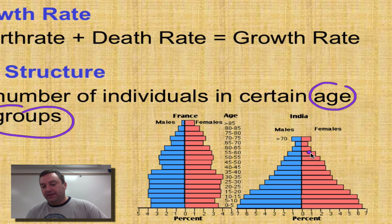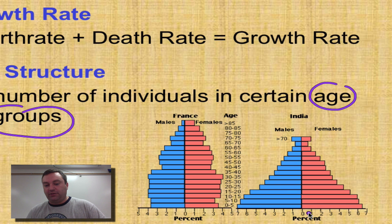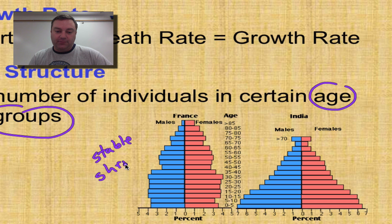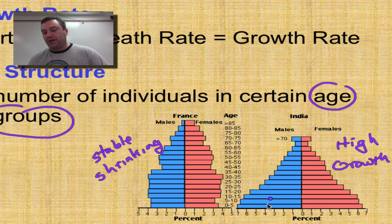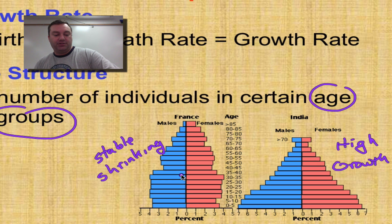Now over here we have India. They have lots of individuals at the lower age categories compared to the older ones, which means when these younger groups reach reproductive age there are going to be tons and tons of babies. For France, for every two people born, two people die — a stable population. In India, as two people die, ten are being born. So France would be considered stable or possibly shrinking, while India has a high growth rate because it has so many young people and a birth rate far exceeding its death rate.